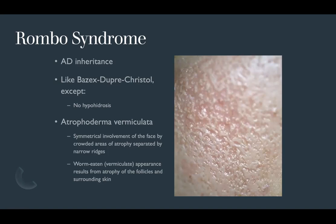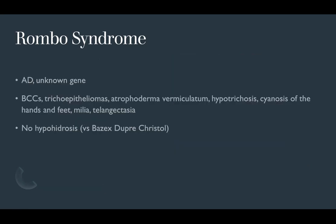Atrophoderma vermiculata shows symmetrical facial involvement with crowded areas of atrophy separated by narrow ridges — a worm-eaten or vermiculate appearance resulting from atrophy of follicles and surrounding skin. In Rombo syndrome, features include BCCs, trichoepitheliomas, atrophoderma vermiculatum, hypotrichosis, cyanosis of the hands and feet, milia, telangiectasias, and no hypohydrosis — in contrast to the hypohydrosis seen in Bazex-Dupré-Christol syndrome.